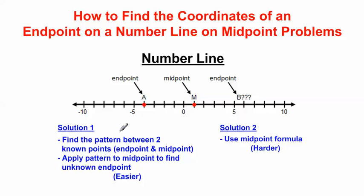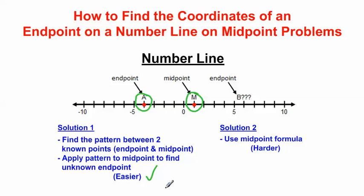First of all, we can find a pattern between the two known points. We know the location of point A, we know the location of the midpoint M, and we know that the midpoint is going to be the same distance from both endpoints. So we can find a pattern from A to M and apply that pattern to the midpoint to find the other endpoint. We know the general location, but this will give us the exact location.